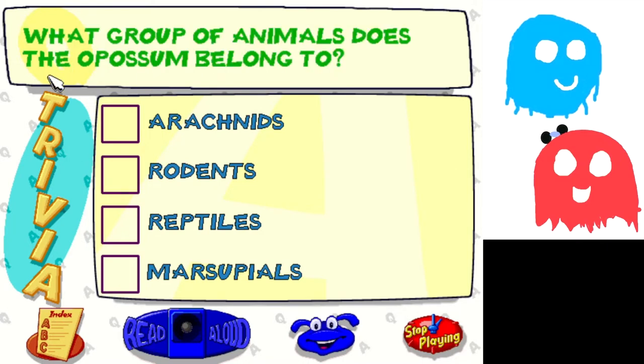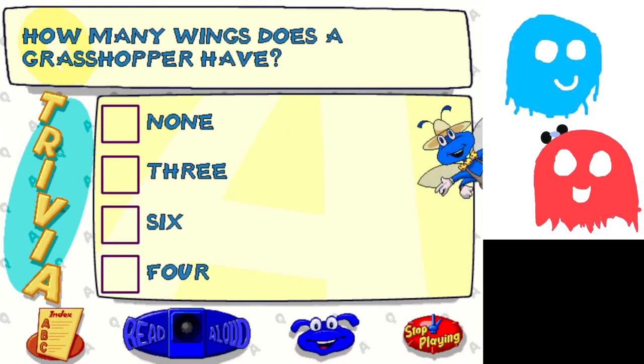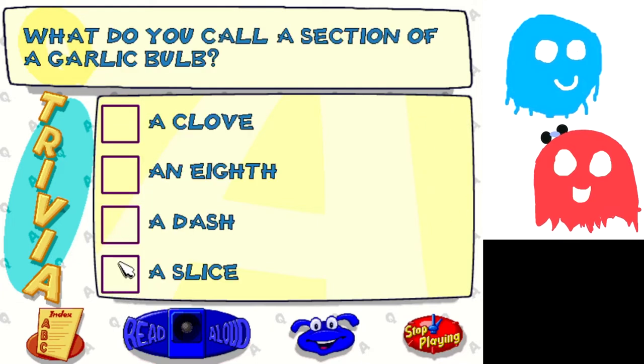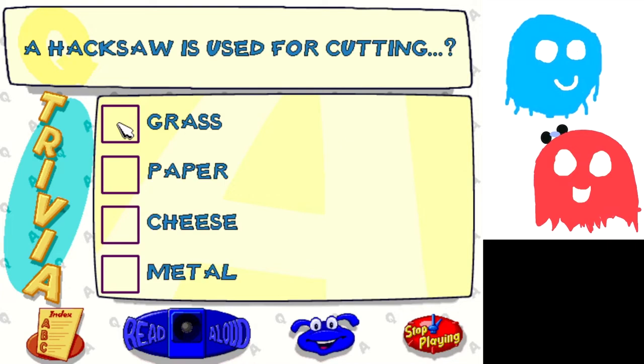What group of animals does the opossum belong to? Rodents or marsupials. It's marsupials. That was my gamer tag. Grasshoppers do have one. They have like six I think. Think back to Bug's Life. I think it's six. It's four. None, they don't have any wings. What do you call a section of a garlic clove? What does aquatic mean? Lives in water. Yes. Hacksaw is used for cutting metal or paper. Not grass, not cheese.